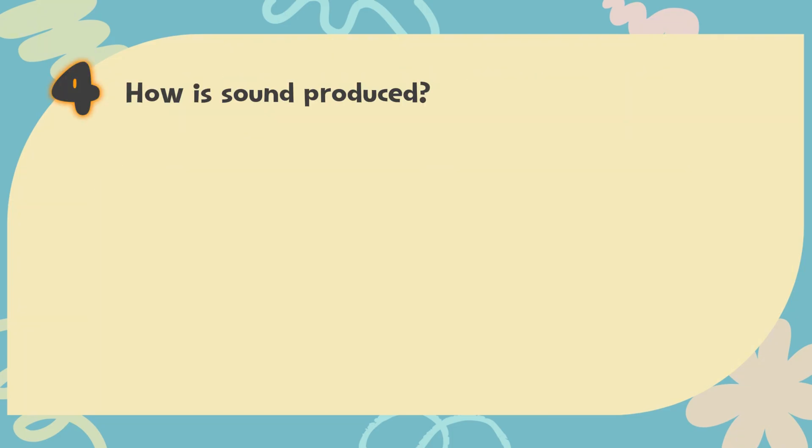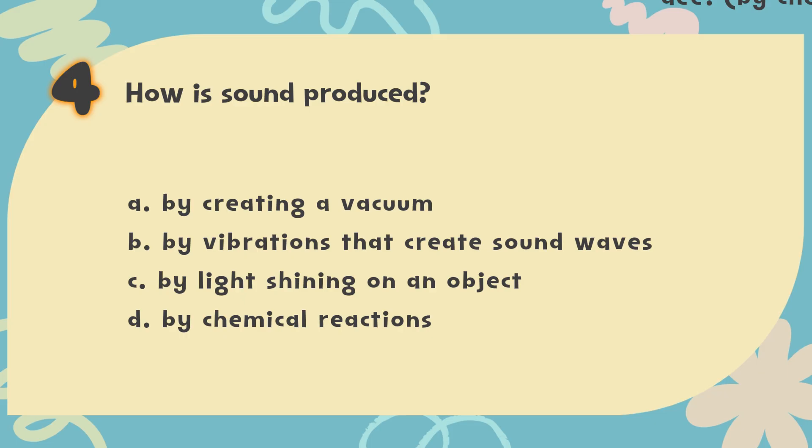Number 4. How is sound produced? The choices are: A. By creating a vacuum, B. By vibrations that create sound waves, C. By light shining on an object, D. By chemical reactions.